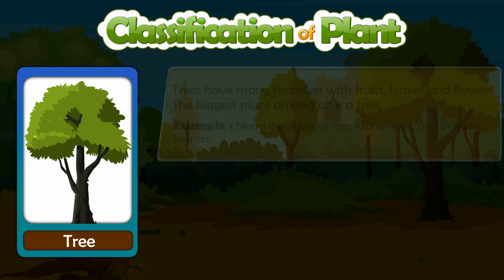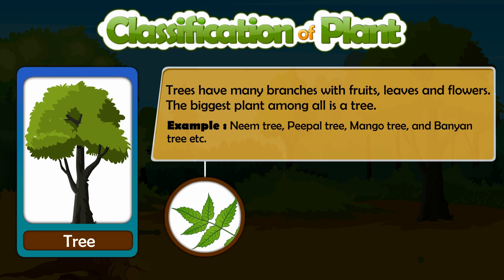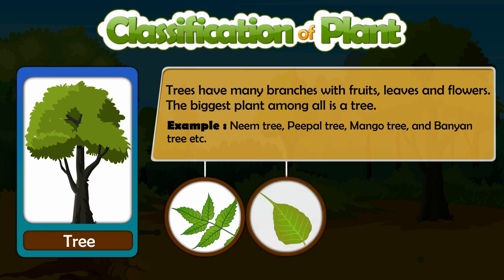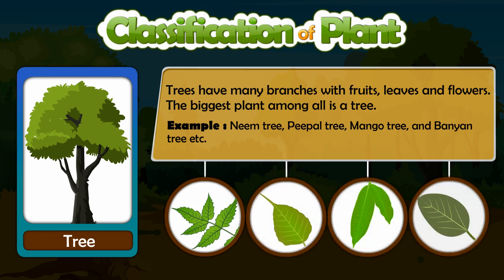Trees have many branches with fruits, leaves and flowers. The biggest plant among all is trees. Examples of trees: Neem tree, Peepal tree, Mango tree and Banyan tree.